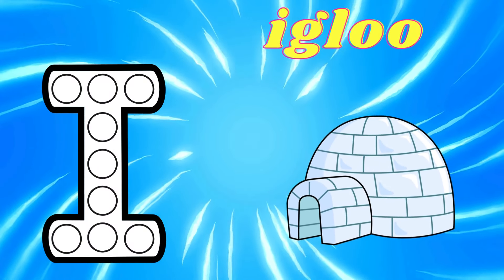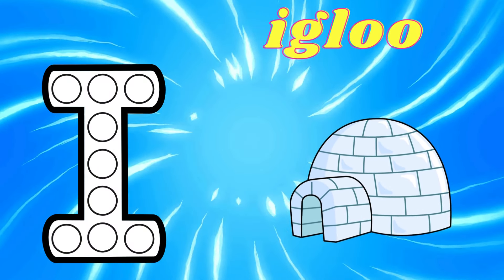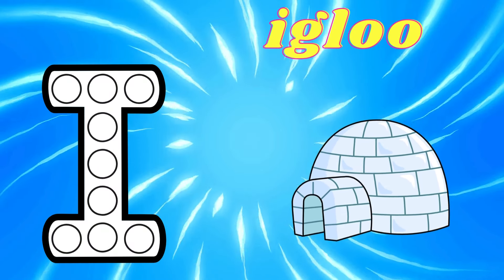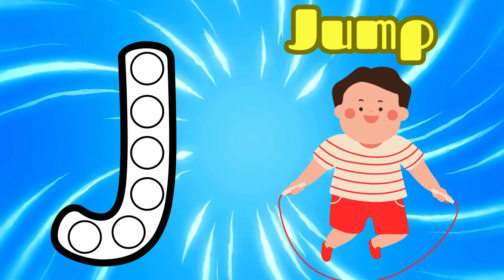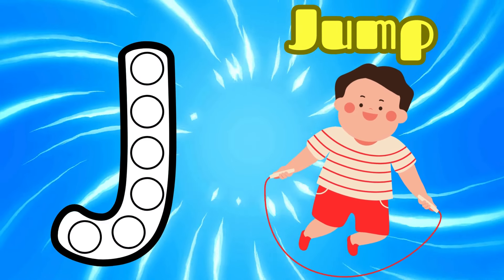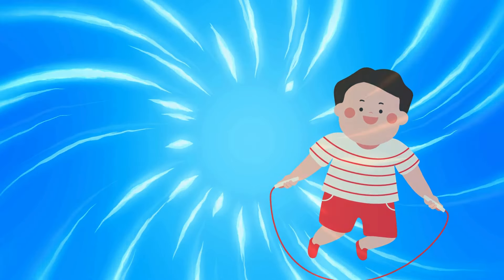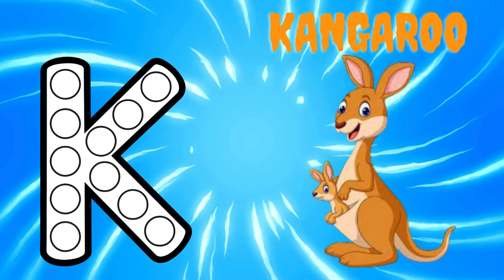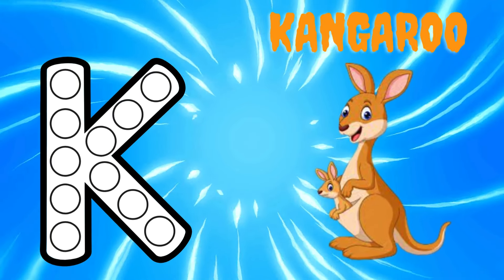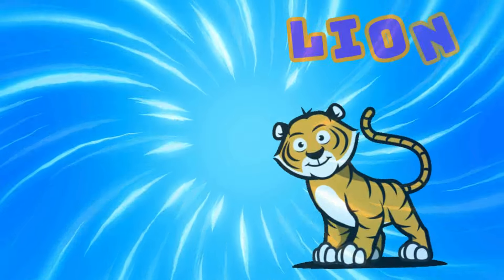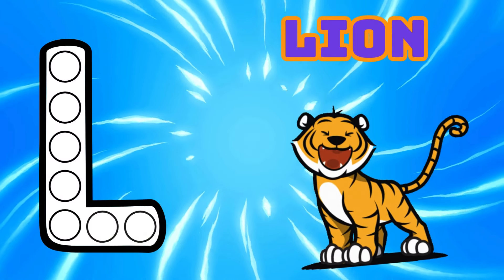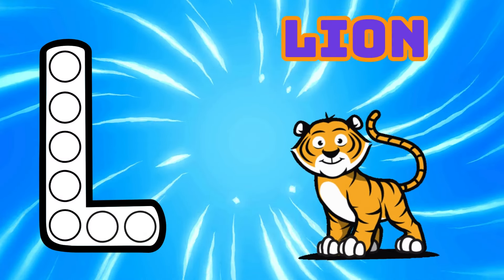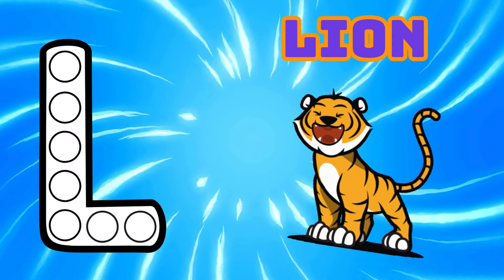I is for Igloo, I-I-Igloo. J is for Jump, J-J-Jump. K is for Kangaroo, K-K-Kangaroo. L is for Lion, L-L-Lion.